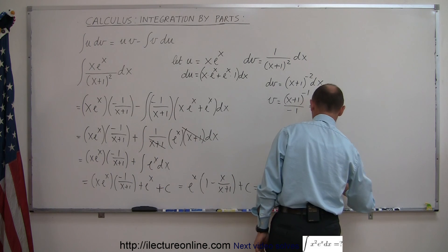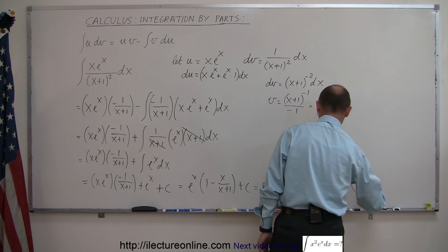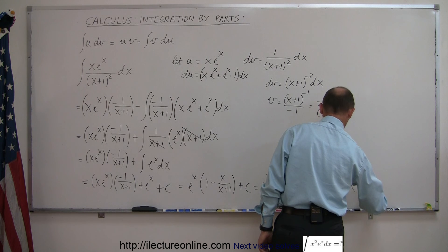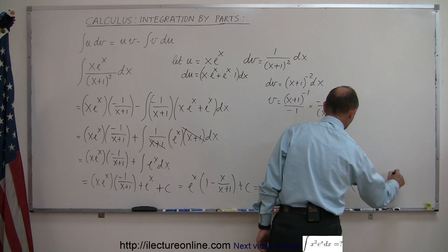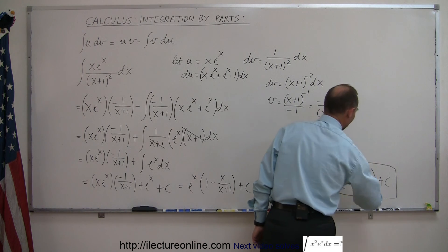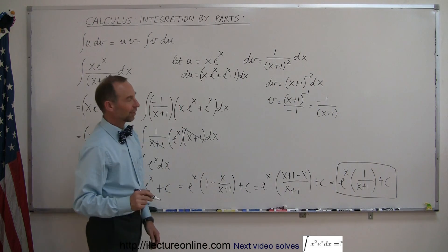So finally, this can be written as e to the x times 1 over x plus 1 plus a constant of integration, and that would then be the simplest form of that particular integral.